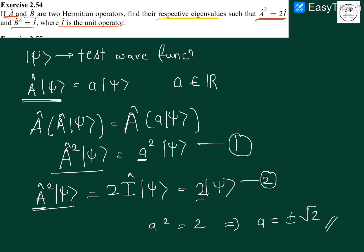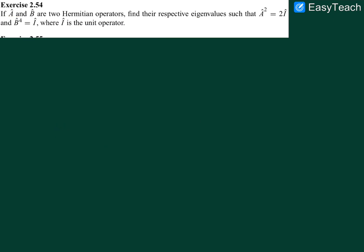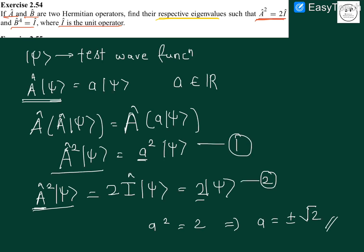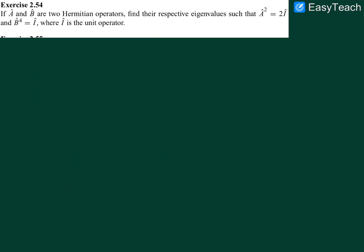Now let us do that for the B operator. We will have the same approach as we have done for A operator, that is applying B operator on some test wave function we get an eigenvalue b.